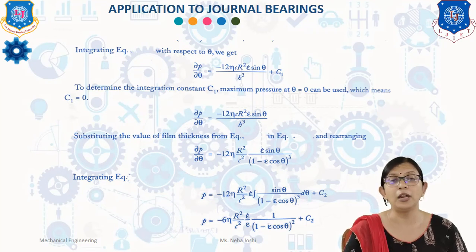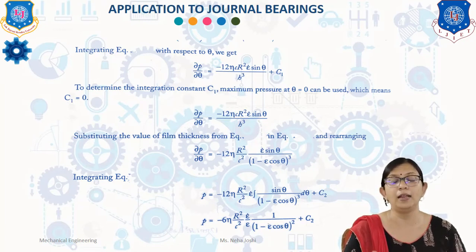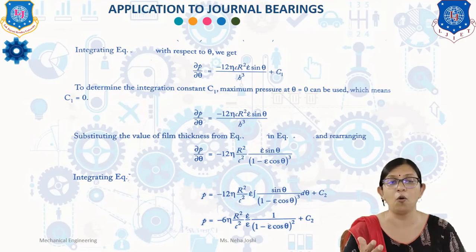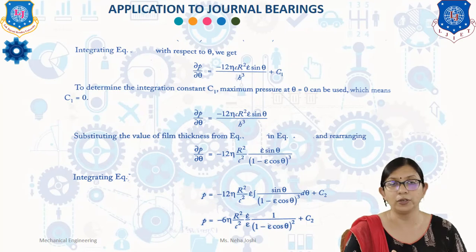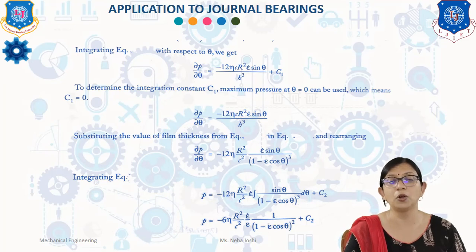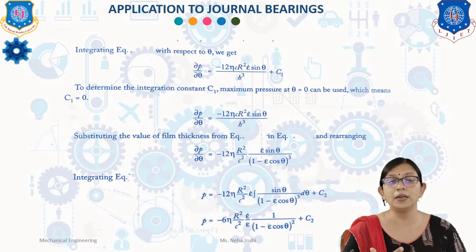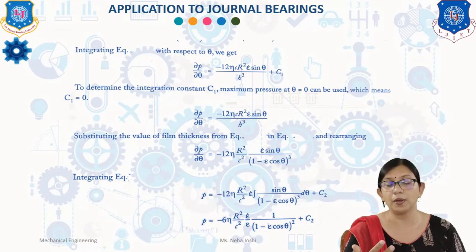By substituting the value of film thickness and rearranging, we get: ∂p/∂θ = −12η·r²/c² · ε̇·sin θ / (1 − ε·cos θ)³. Integrating this equation gives: p = −6η·r²/c² · ε̇ · 1/(1 − ε·cos θ)² + C₂.